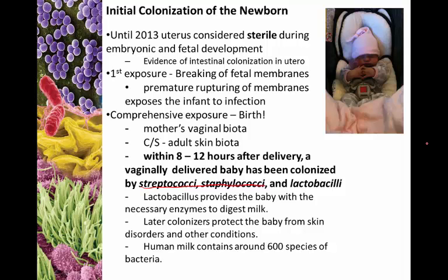Human milk contains around 600 species of bacteria, many of which help colonize the newborn. As the child ages, exposure increases through food sources and the environment, building a sufficient and well-functioning normal microflora. This concludes part one of Chapter 11, with more parts to follow.